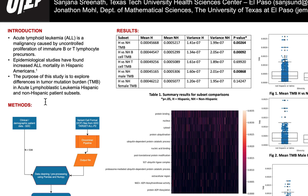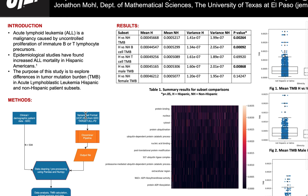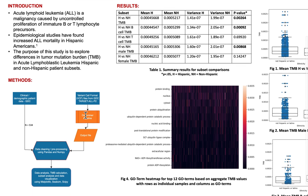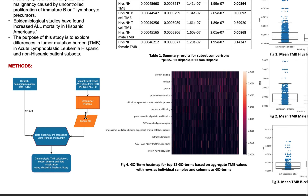Especially here at the border, several studies have found a higher incidence in acute myeloid leukemia as well as acute lymphocytic leukemia, as well as worse prognosis. So the purpose of this study is to explore differences in tumor mutation burden in acute lymphoblastic leukemia in Hispanic and non-Hispanic patient subsets.